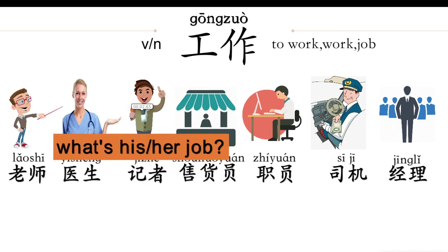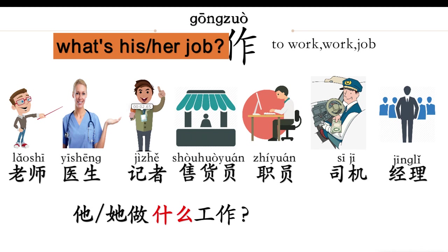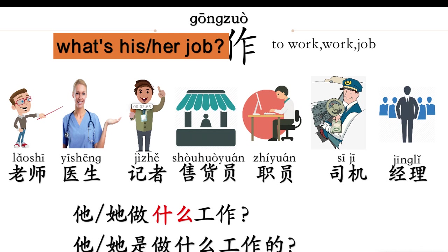In English we could ask: what's his or her job? What does he or she do for a living? Then in Chinese, how to ask such a question? The key word is 工作. What in Chinese is 什么. So: 做什么工作? 他做什么工作? We can also ask: 他是做什么工作的?